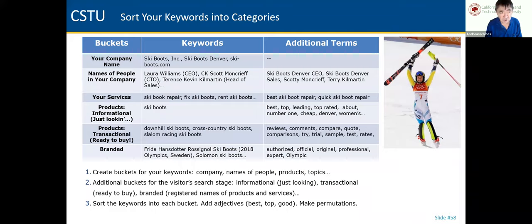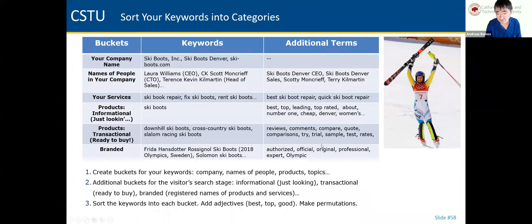Put keywords in categories: Branded — your company name, company domain, products, services, people in the company. Services — ski boot repair, fixing, all keywords around services. Products — the products themselves. Informational — searching for 'best ski boots,' 'top ski boots,' looking for information. Transactional — they want to buy: compare, quote, try, sample, test. And more branded: for example, if a Winter Olympic winner has the official Rossignol ski boot, you use keywords like 'official' and 'original' around that. Make one campaign per category.